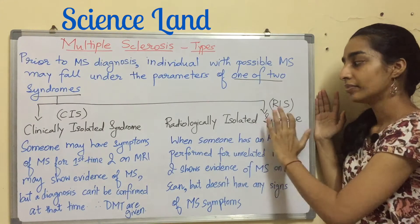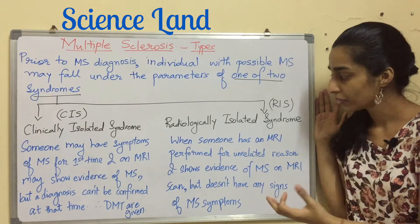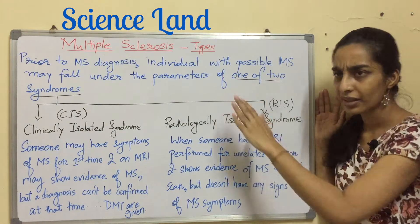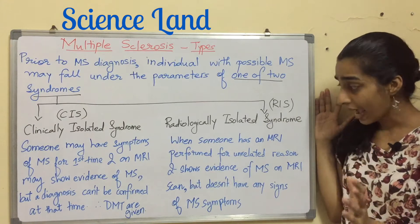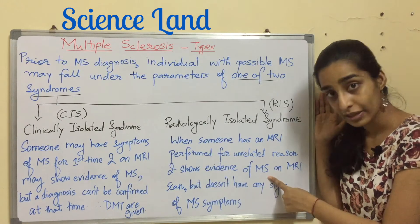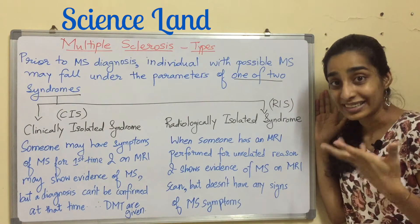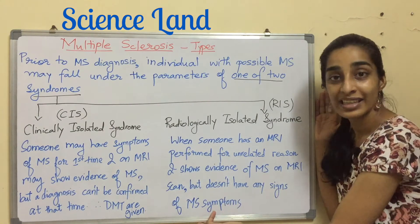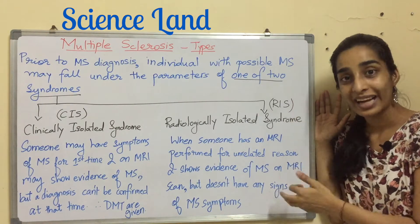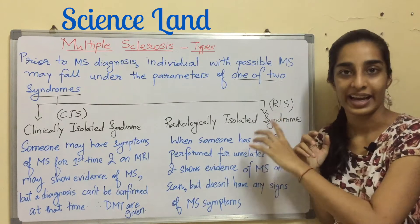The second is RIS. When someone has an MRI performed for an unrelated reason — nowhere related to multiple sclerosis — and it shows evidence of multiple sclerosis on the MRI scan when the person doesn't have any signs or symptoms of MS, that scenario places them under RIS.